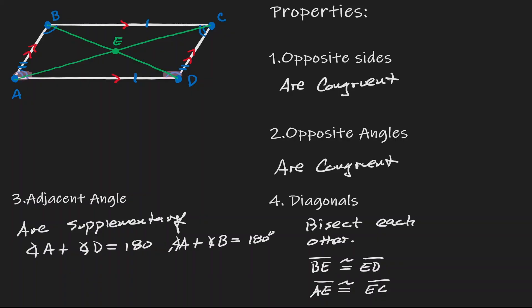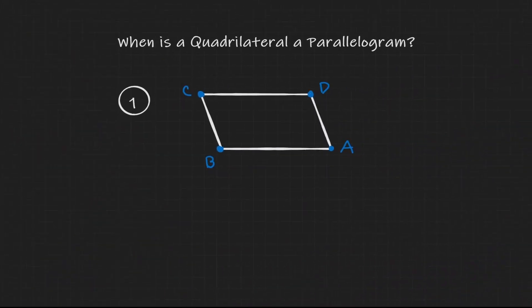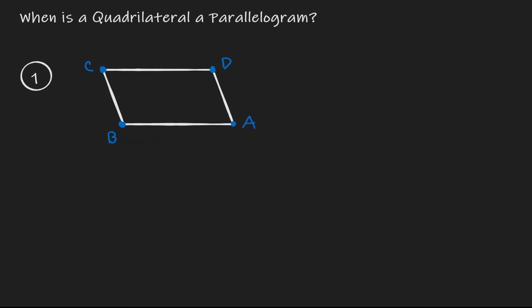So these are the properties to consider when discussing a parallelogram. If we ever want to show that a figure is a parallelogram, we need to show that any of these properties are fulfilled. Now let's take a look at four different situations that will give us these properties — when can we label quadrilaterals as parallelograms?